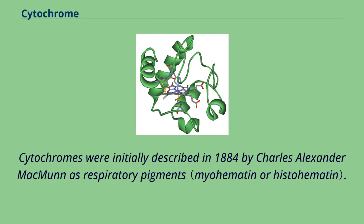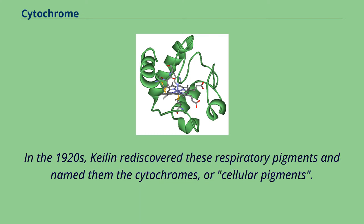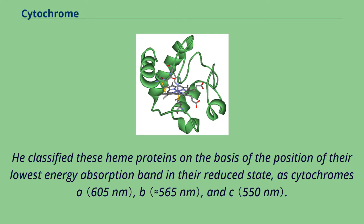Cytochromes were initially described in 1884 by Charles Alexander McMahon as respiratory pigments. In the 1920s, Keilin rediscovered these respiratory pigments and named them the cytochromes, or cellular pigments. He classified these heme proteins on the basis of the position of their lowest energy absorption band in their reduced state, as cytochromes A, B, and C.